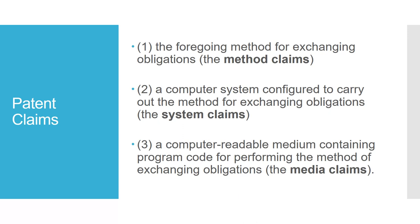Alice's patent claimed the following three things: a method for exchanging obligations, a computer system configured to carry out that method, and a computer-readable medium containing the program code that performs this method. The court noted that all of the claims are implemented using a computer.